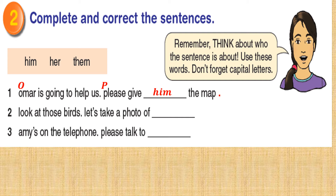Now you have 3 minutes to answer number 2 and number 3. Check your answers with me. Number 2: Look at those birds — let's take a photo of them. 'Look' starts with capital L. Full stop. Start the second sentence with a capital letter — let's. We are talking about more than one, those birds, so we use 'them'. Full stop at the end.